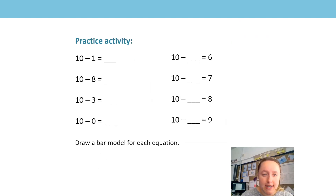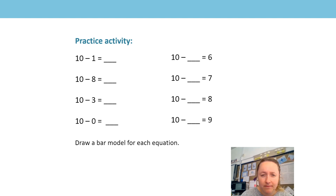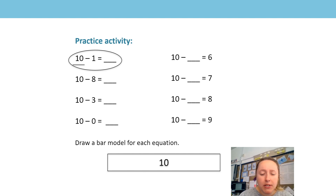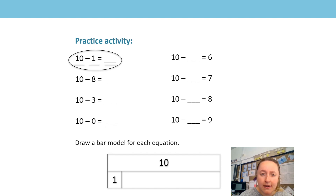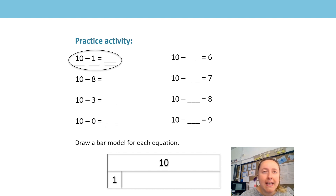Here is your practice activity for today. I would like you to fill in the missing numbers for each equation and draw a bar model to show the relationship between the numbers. For example, 10 subtract 1: 10 is my whole at the top, 1 is my part underneath, and I need to work out the missing number using my number bond pairs. 10 is made of 9 and 1, 1 and 9 — so the missing part is 9.